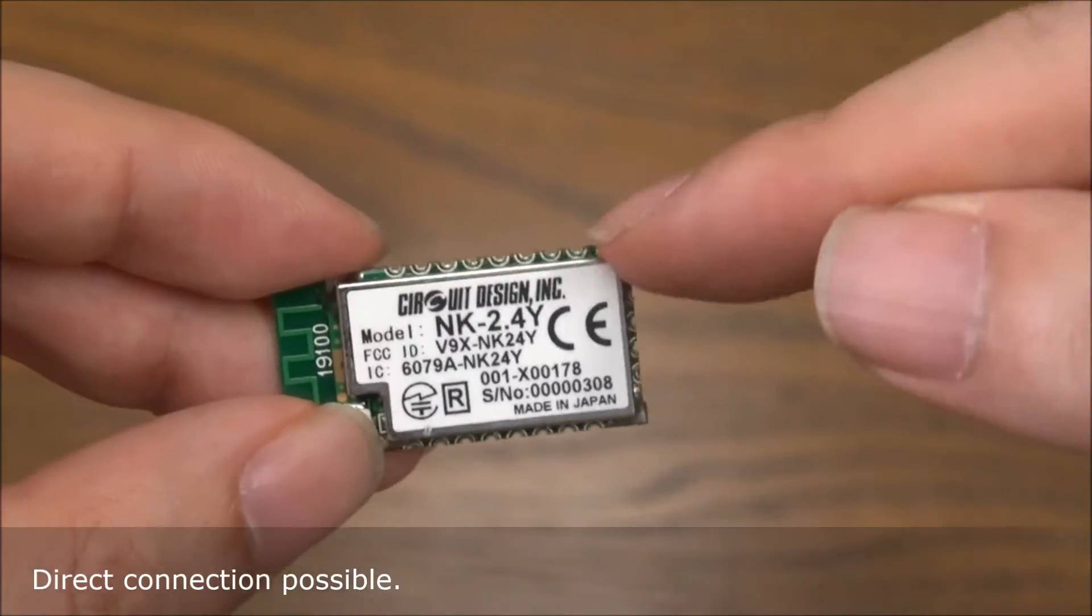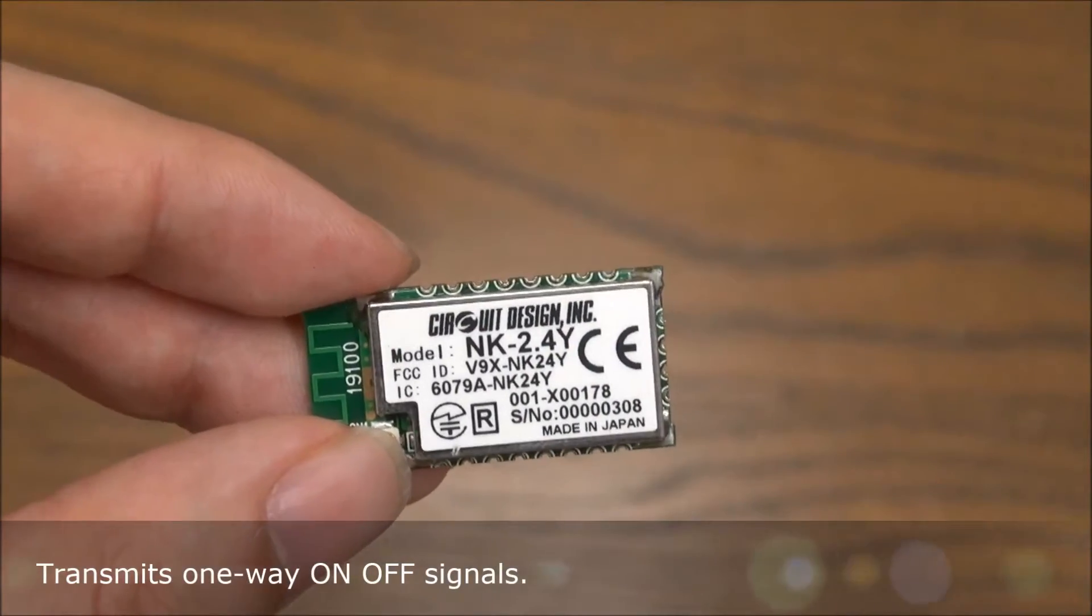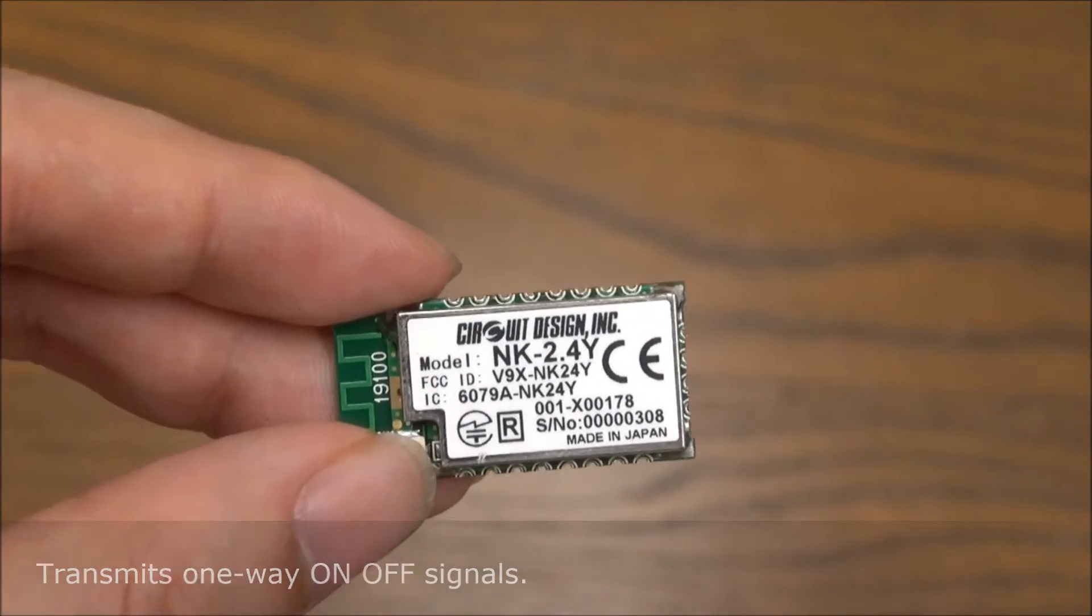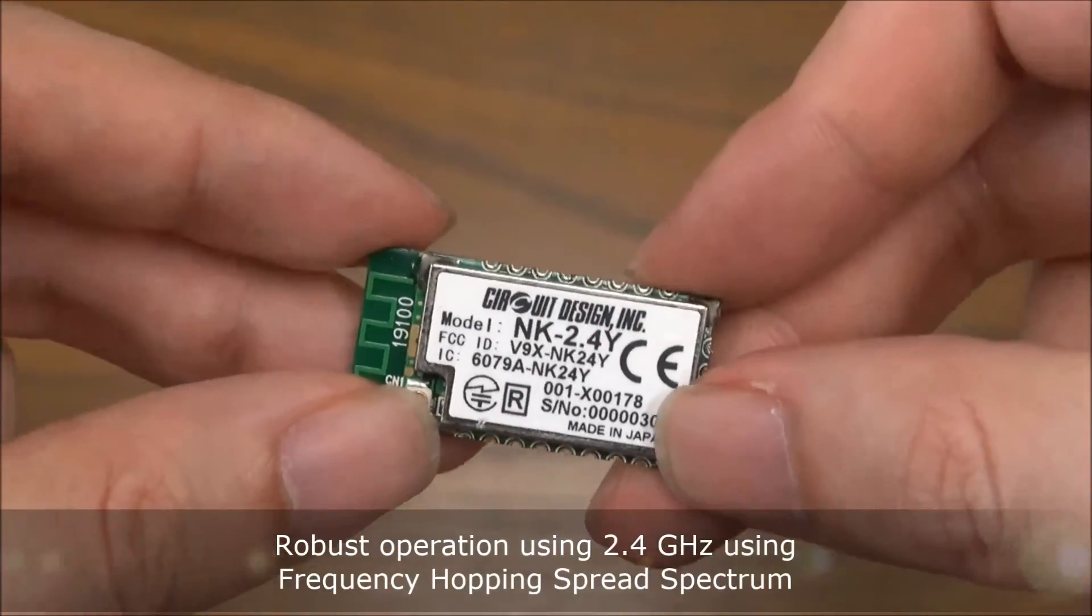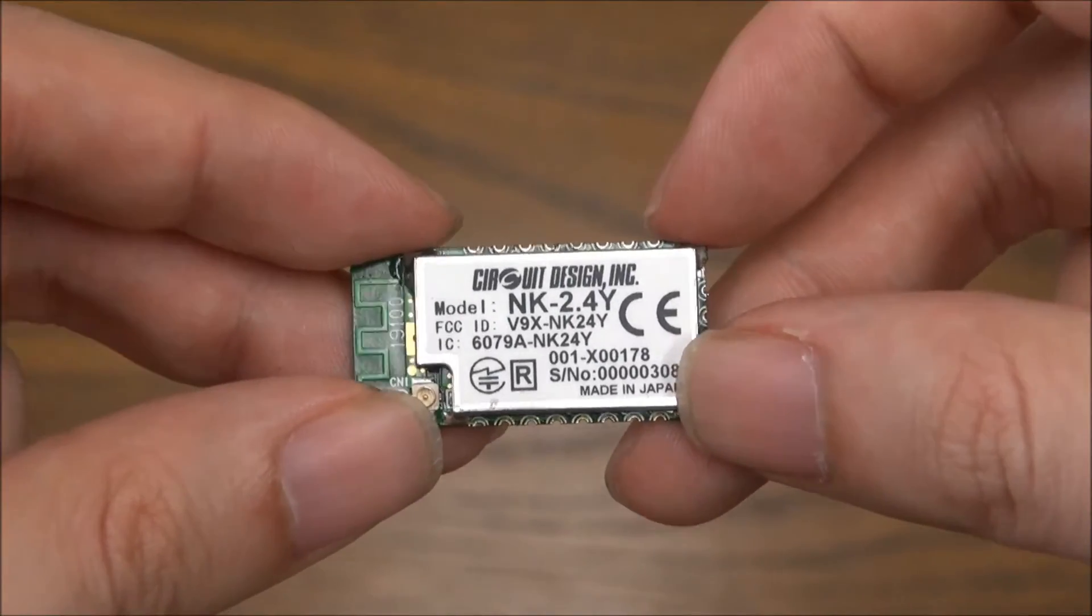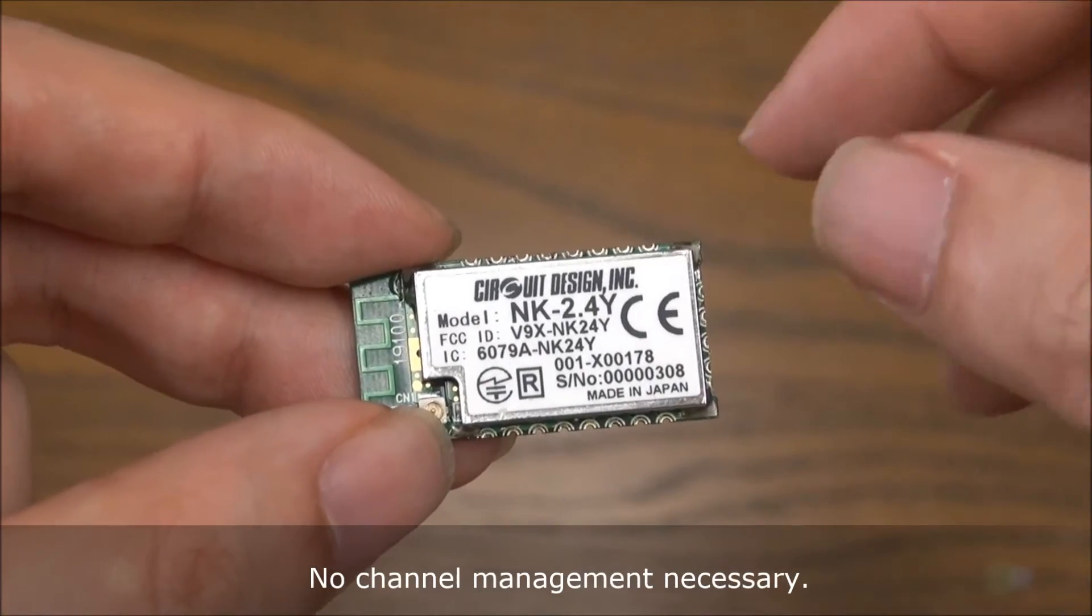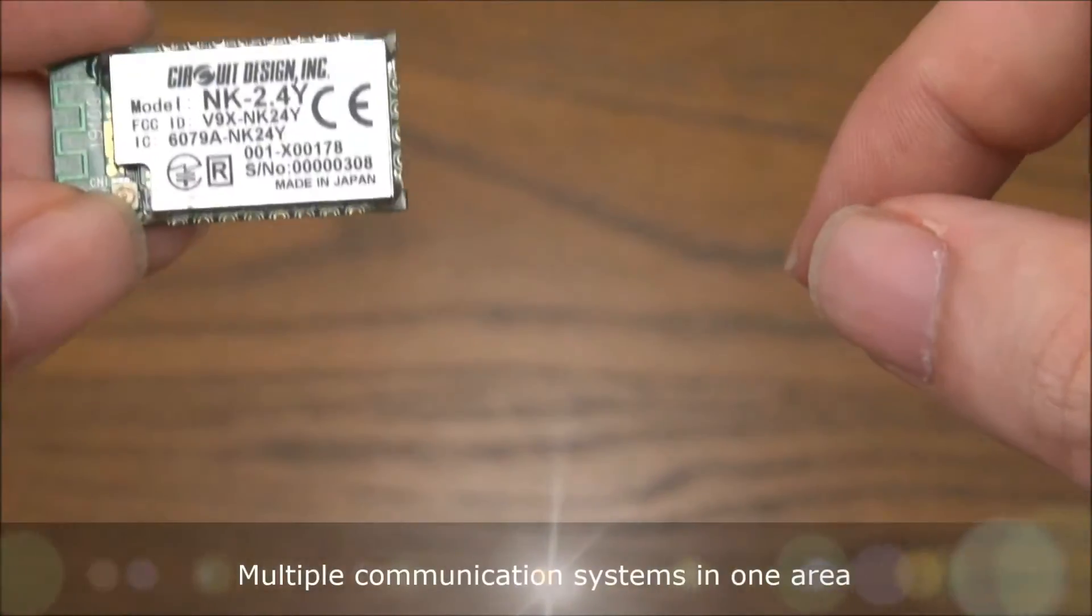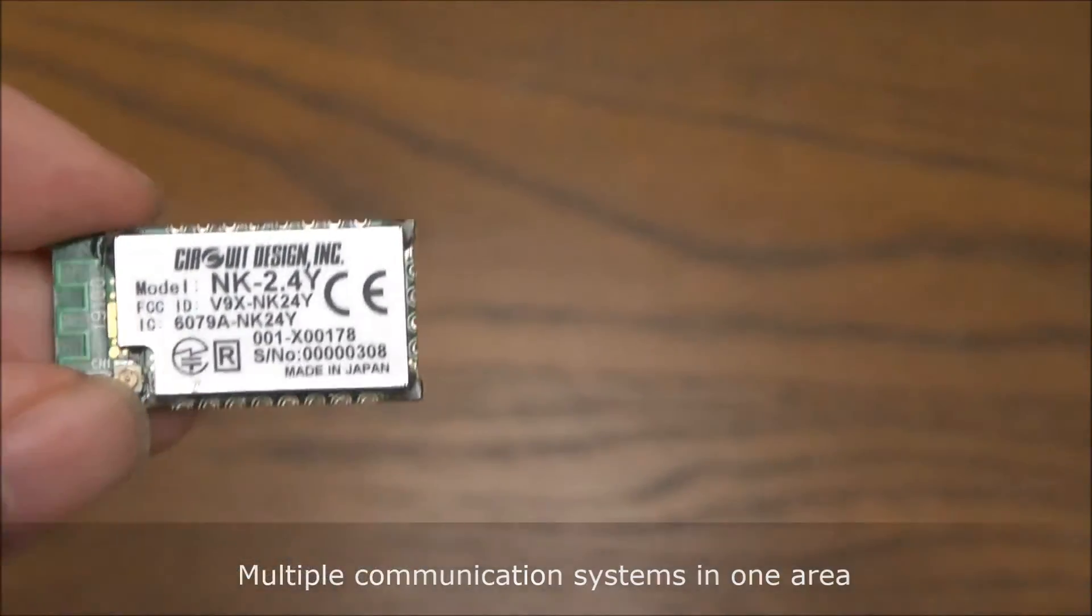This transmits one-way on-off signals to another receiver module, and the frequency of operation is 2.4 GHz, frequency hopping spread spectrum. The user doesn't need to select any channels, which is convenient, and you can have multiple systems in one area.